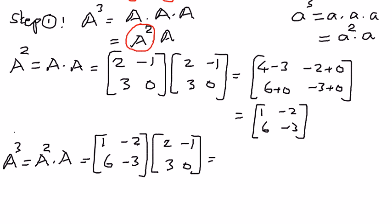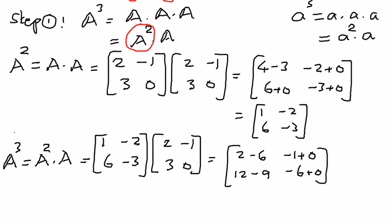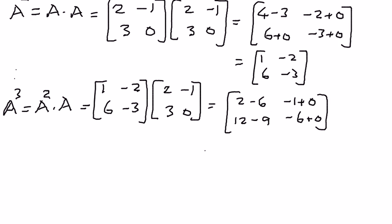We expand it out: 1 times 2 is 2, negative 2 times 3 is negative 6; 1 times negative 1 is negative 1, negative 2 times 0 is 0; 6 times 2 is 12, negative 3 times 3 is negative 9; 6 times negative 1 is negative 6, negative 3 times 0 is 0. Simplifying: 2 minus 6 is negative 4; negative 1 plus 0 is negative 1; 12 minus 9 is 3; negative 6 plus 0 is negative 6.